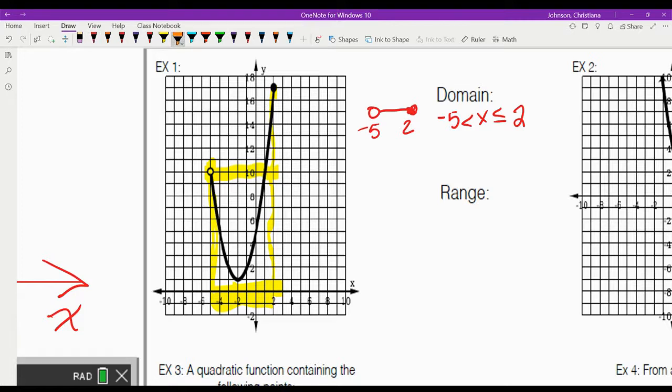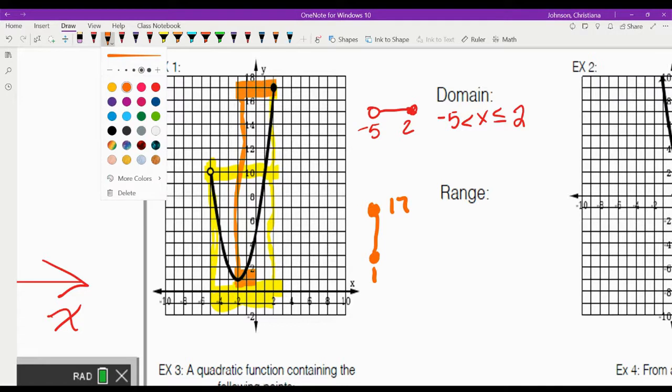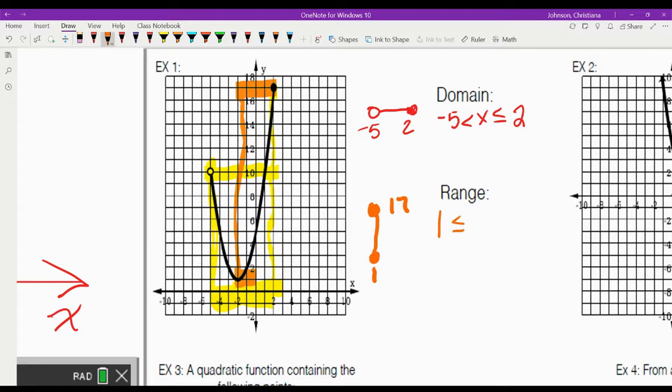And now we can do our range. So we start at the lowest point, which is right here, and we go up to the highest point, which is right there. So our lowest point for our range is a closed hole because there's not an actual open hole. You can see that there's something there. And that's at positive 1, and it's going up to a closed hole at positive 17. So that means it's 1, 1 is less than or equal to y, because its range is less than or equal to 17.